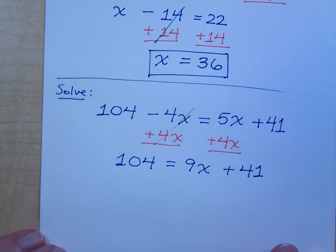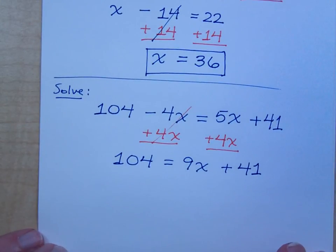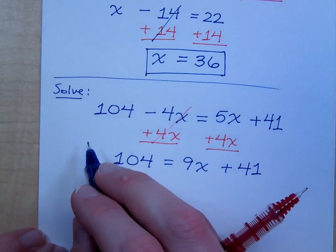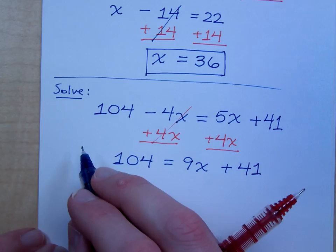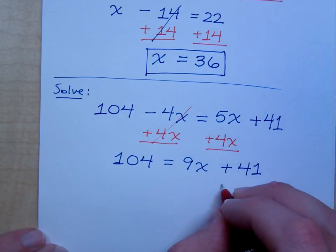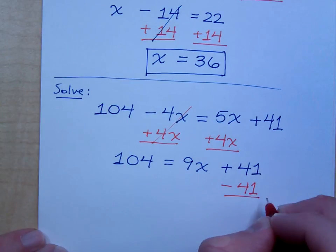So now I have 104 is equal to 9x plus 41. Now what? Can you subtract the 41? In that last step, I could have subtracted 41 at the same time. Like I could here subtract 41. Yeah, that's what I was going to say. You can subtract it. It would be like 104 minus... Well, that's what it's going to be. It's going to be subtracting 41 on both sides.